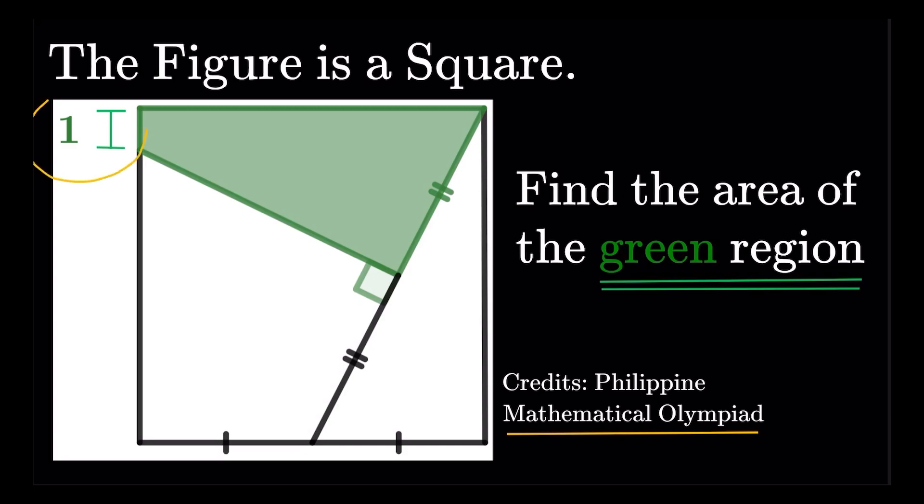So this part's one, and then we do have some marks here to indicate that this segment is equal to this segment, then this segment is equal to this segment, and we do have a right angle here. So find the area of the green shaded region. Credits to the Philippine Mathematical Olympiad for this item.